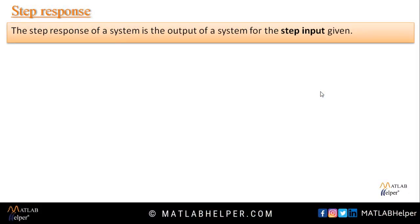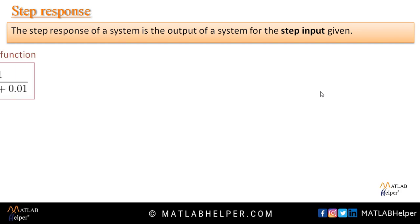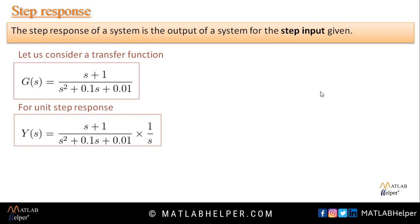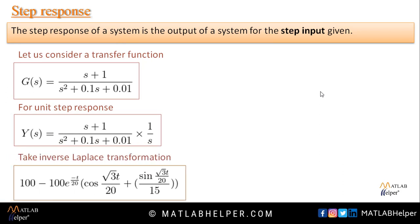Now we will implement the step response. The step response of a system is defined as the output of a system for a given step input — this is a time domain response. If the step input amplitude is unity, it is called a unit step response. Consider the transfer function G(s) = (s + 1) / (s² + 0.1s + 0.01). We multiply this by 1/s because the Laplace transform of the step input is 1/s, giving us the output equation. We then apply the inverse Laplace transform to get y(t) in the time domain.